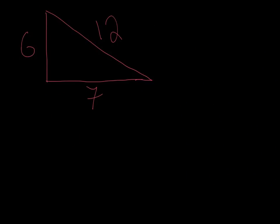Alright, let's take an example of how to use the converse of the Pythagorean theorem. Let's say I'm given a triangle with sides 6, 7 and 12, and I want to know if this makes a right triangle.